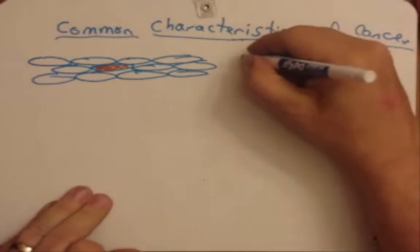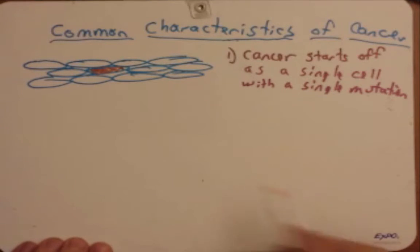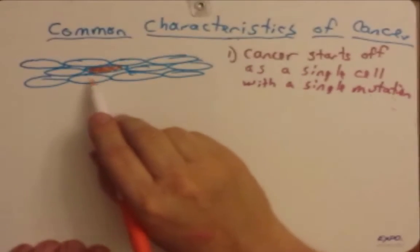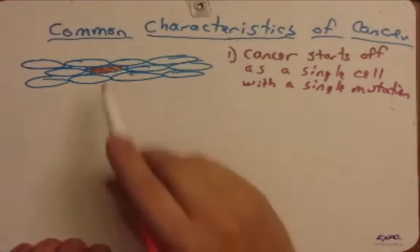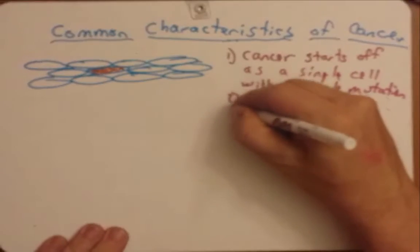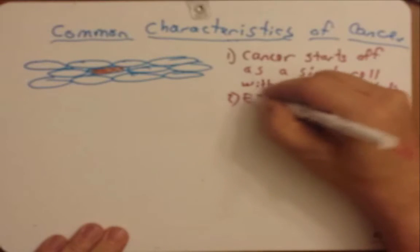But it begins with a mutation in a single cell. This mutation doesn't make this cell look any different, but it starts off as this single cell with a single mutation and sets the stage for the cancer to start to progress. That first mutation, or at least one of the early mutations,